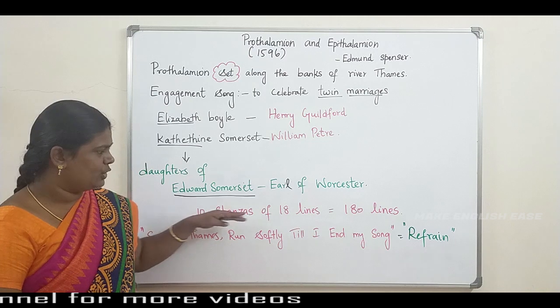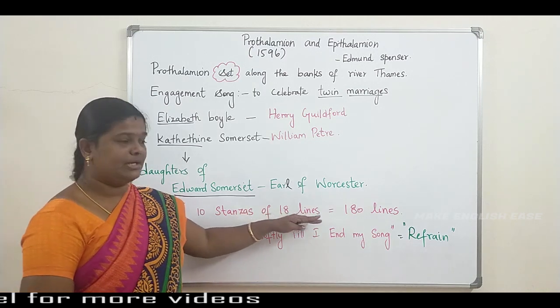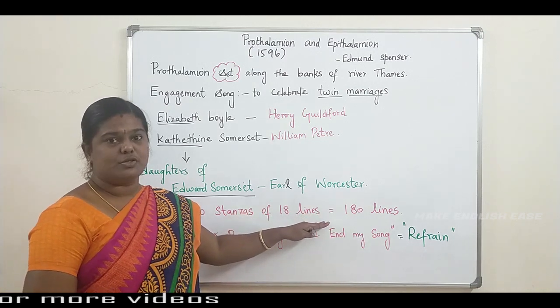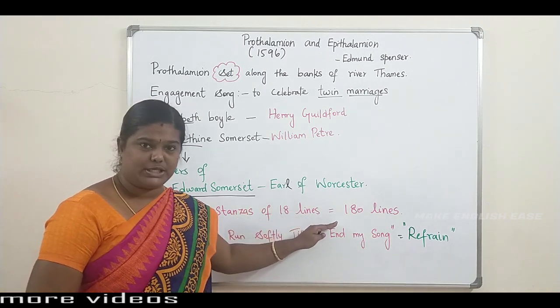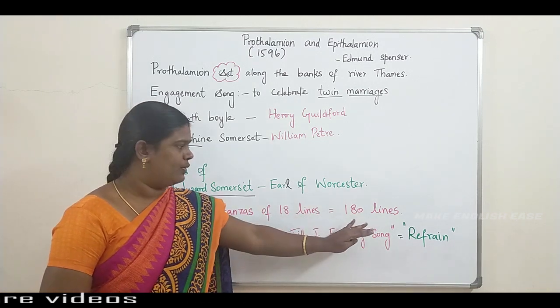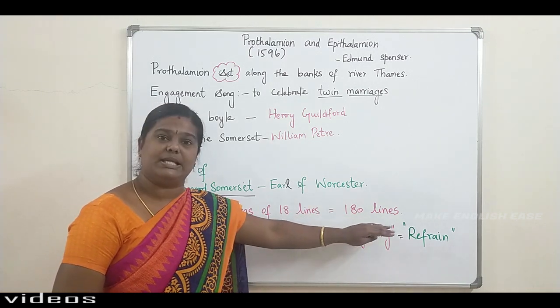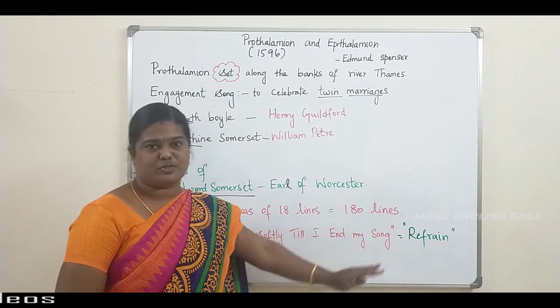This poem is written in ten stanzas, each of 18 lines. So totally there are 118 lines in this poem.